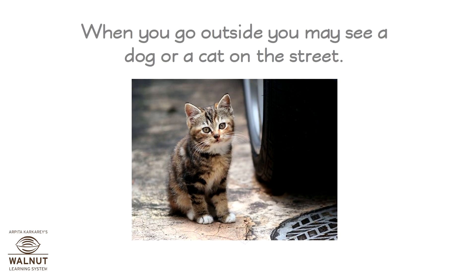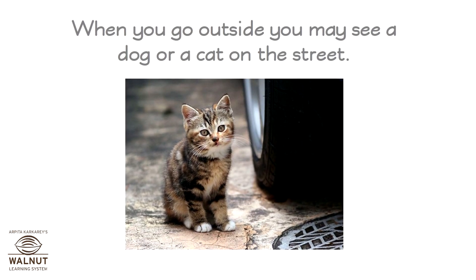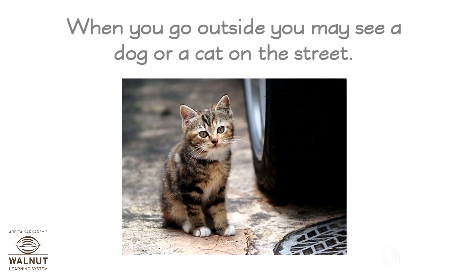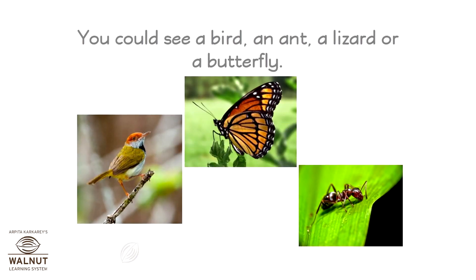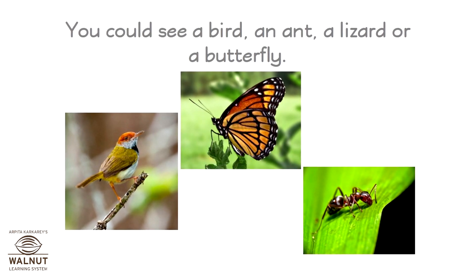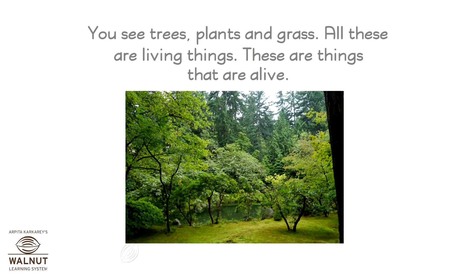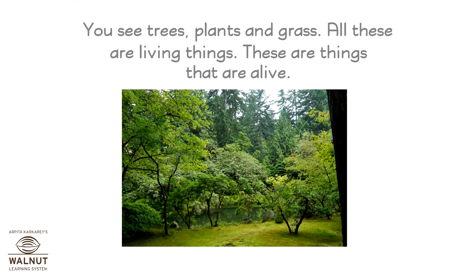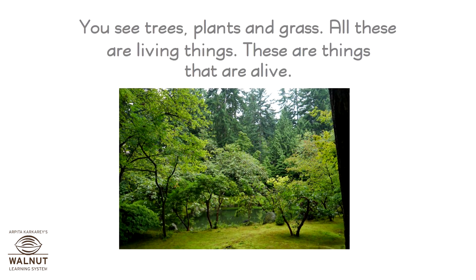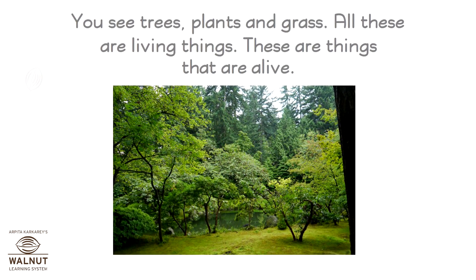When you go outside, you may see a dog or a cat on the street. You could see a bird, an ant, a lizard or a butterfly. You see trees, plants and grass. All these are living things. These are things that are alive.